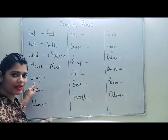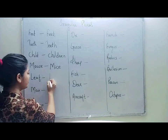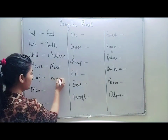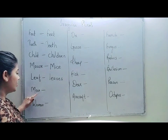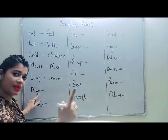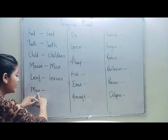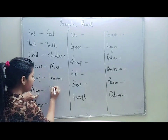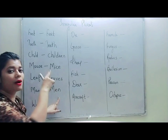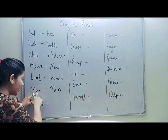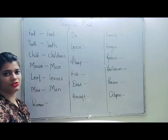Next is leaf. If there is one leaf, you say leaf. But if there is more than one, you say leaves, L-E-A-V-E-S. Next, if there is one man, you say man. But if there is more than one, the plural of man is men, M-E-N. We pronounce it 'men', but instead of A, we write E.